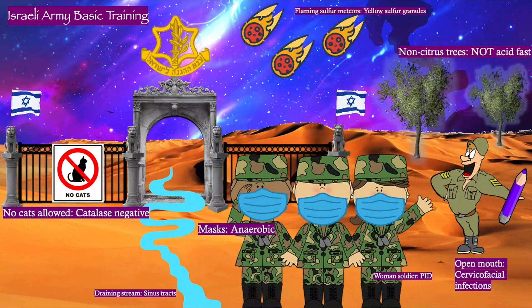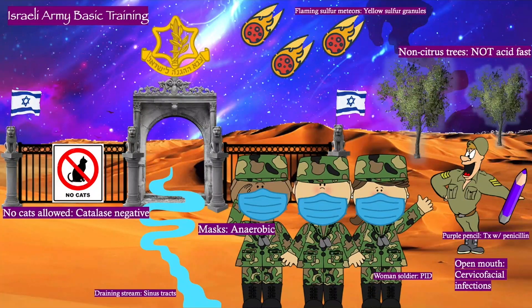And how is he guiding our cadets? He's got a big stick — it's our purple penicillin pencil — to help you remember that the treatment for actinomyces infection is penicillin, or something similar like ampicillin, as well as drainage of any abscess that is present. Thank you.